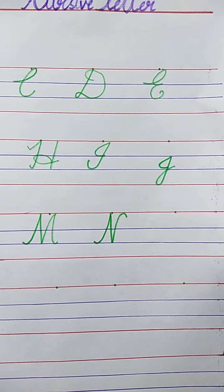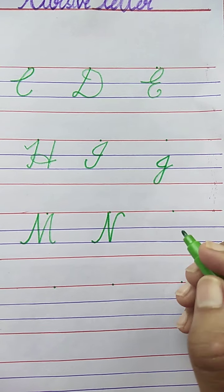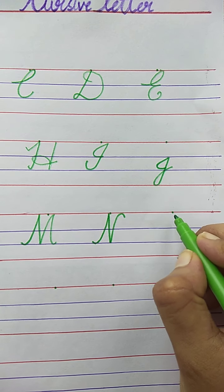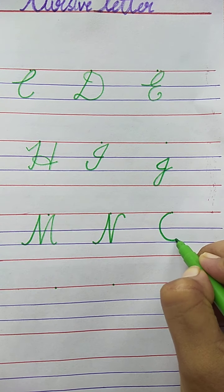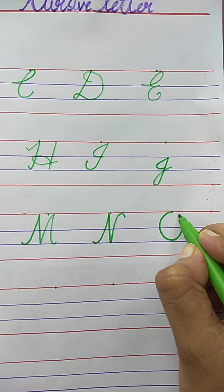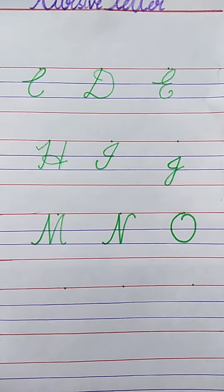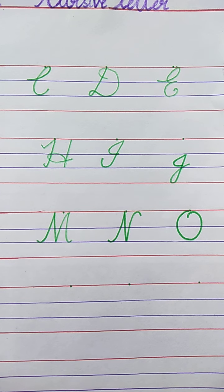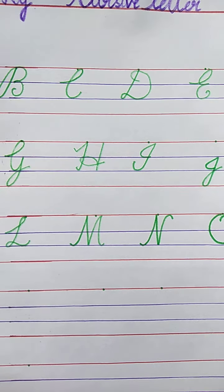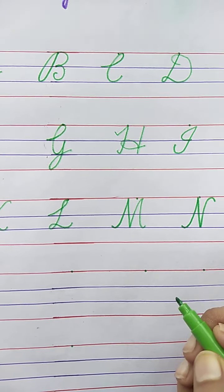Now, tell me the next letter. O. O for Owl. Owl. The spelling of Owl is O-W-L. Owl.